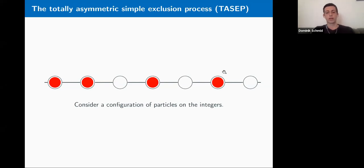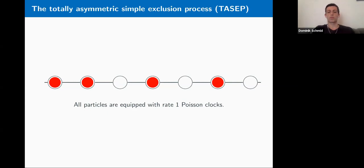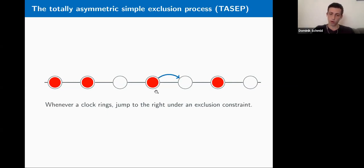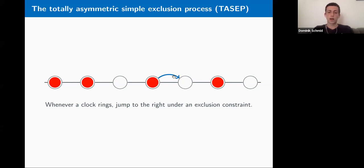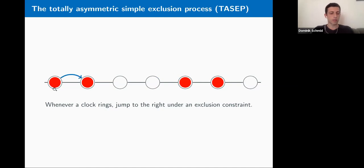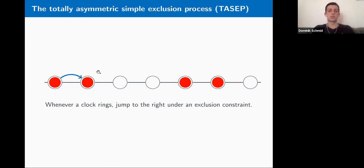We consider the following dynamics. Each particle is equipped with a rate-1 Poisson clock, and whenever a clock rings for a particle, it tries to jump to the right-hand side subject to an exclusion constraint. Whenever the target site is empty, the move is performed. However, when the target site is already occupied by another particle, the move is suppressed.